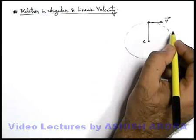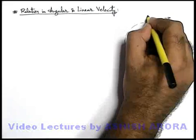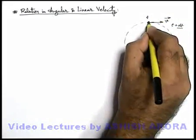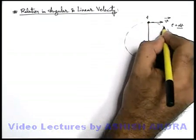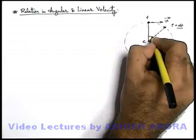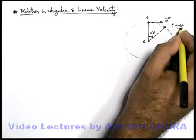When the particle is moving, let us consider a small interval of time, say from t to t plus dt. In such a short duration dt, say the particle goes from this point to this point. Say it covered an angular displacement dθ in this duration of dt.